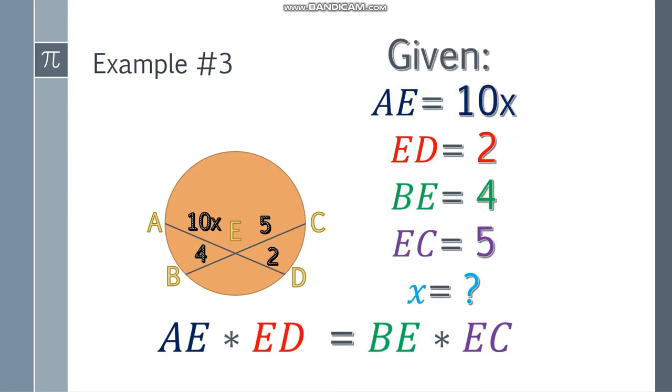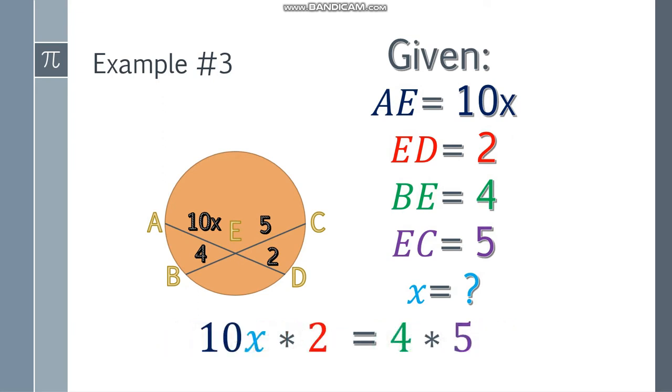Place the formula again. AE multiplied to ED, the product of these two is equal to the product of these two. Substitute the values. We have 10X times 2 is equal to 4 times 5. So simplify that one. 10X times 2, that will be 20X. It's equal to 4 times 5, that will be 20.